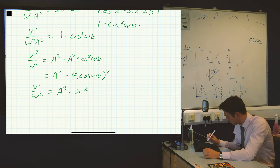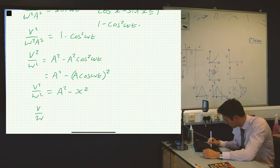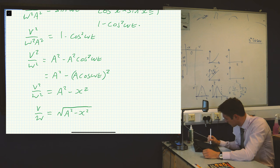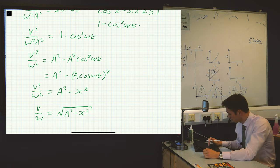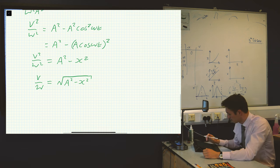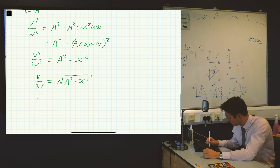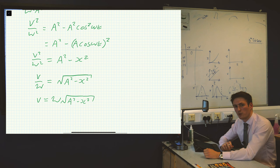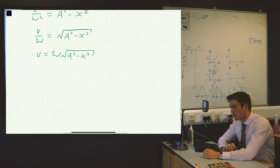Then if we take the square root of both sides and multiply both sides by omega, we get our equation for v: v equals omega times the square root of A squared minus x squared.